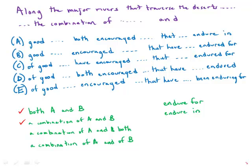Notice that we have the combination word already in the prompt, so where both appears, that's redundant. Also notice that it makes sense to say a combination of A and B, but if we say a combination of A and of B, that sounds wrong.